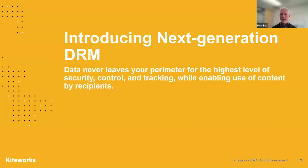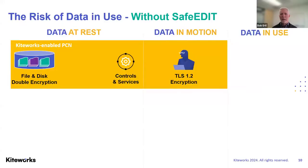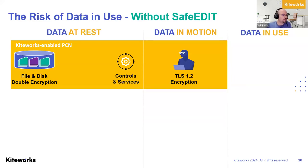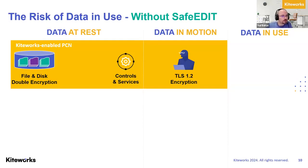So how do you get around all those problems when you design the Kiteworks Next Generation DRM? Traditionally, we have data at rest — we can encrypt files on the server where they live when they're not in use. In Kiteworks, we use double encryption, both at the file level and the disk level. We have controls and services to decide who can get access to the file. And then we have data in motion — using TLS 1.2 encryption, and as of the latest version of our product, we are also supporting TLS 1.3. But the problem is with data in use, and this is what we solved.